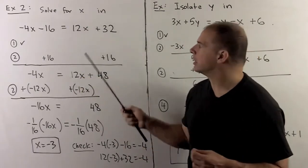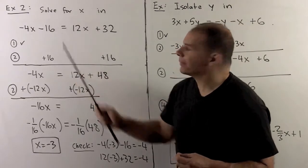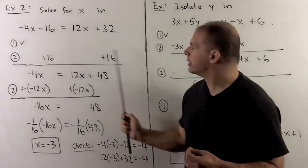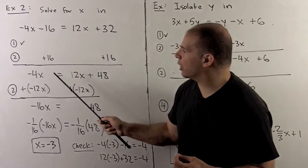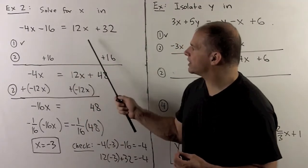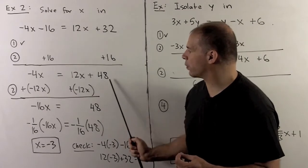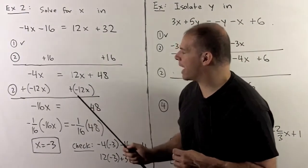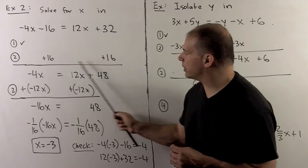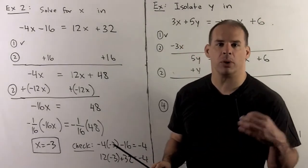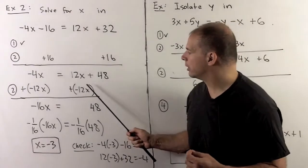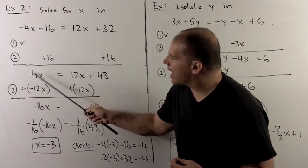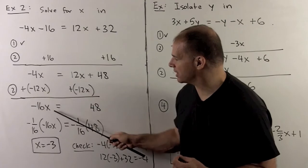Let's do this the long way. To get rid of minus 16, I add a plus 16 to both sides to keep the equality. Minus 16 and plus 16 go away, leaving me with minus 4x. On this side I have 12x, and 32 plus 16 is 48. Now I want to push 12x to the left as minus 12x. To make it disappear, we add minus 12x to both sides. The 12x and minus 12x cancel out; 48 stays; and minus 4x minus 12x gives minus 16x.